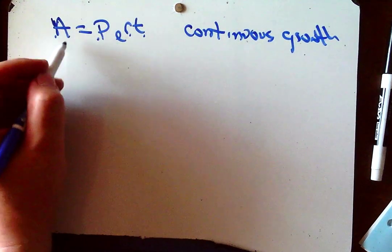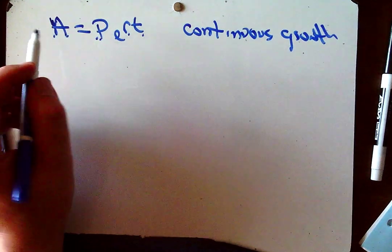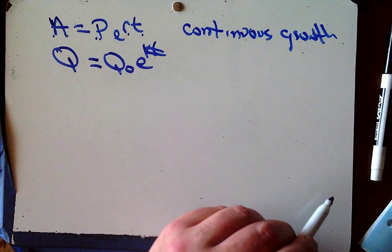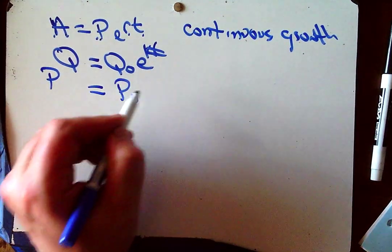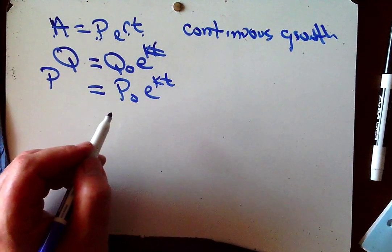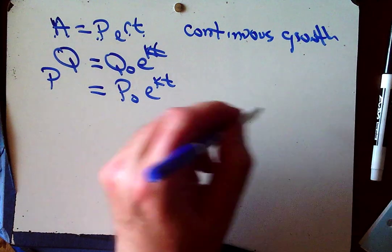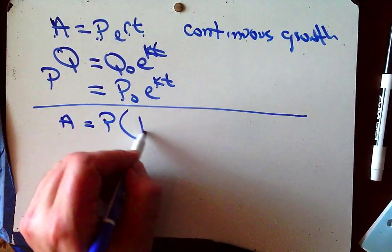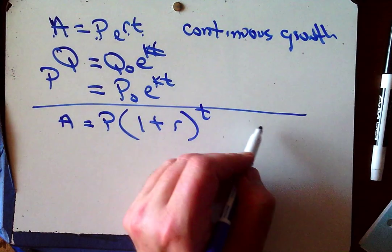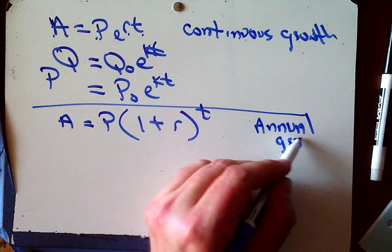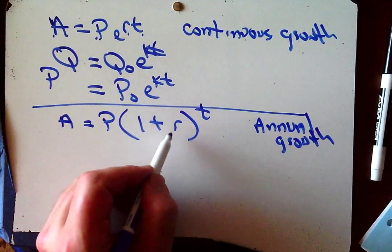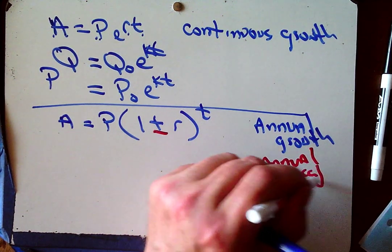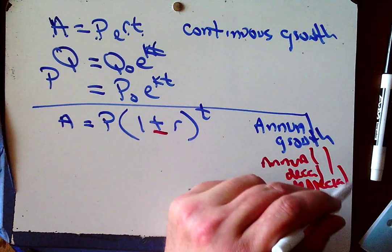We can have variations of that. If instead of talking about amounts and principles, we talk about quantities, initial quantities, a rate of change, and time — maybe we're talking about population — we get P sub zero E to the KT. All of these are synonyms. We also have the ones from Algebra 2: P times one plus R to the T. This is annual growth, and with a minus, that would be annual decay or depreciation — a lowering of value.